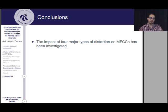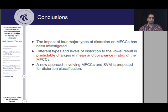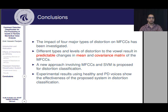In this study, we investigated the impact of four major types of distortion on MFCCs. Through experimental analysis, we observed that different types and levels of distortion result in predictable changes in the mean and covariance matrix of MFCCs. Based on these observations, we proposed a new approach involving MFCCs and a support vector machine for distortion classification in vowels. The experimental results using healthy and Parkinson's voices show the effectiveness of the proposed system. Thank you for your attention.